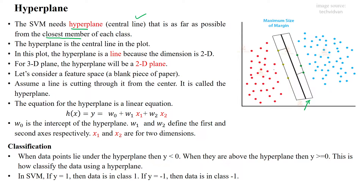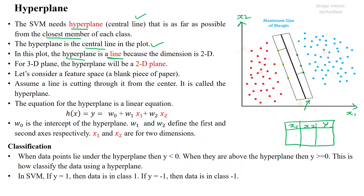The hyperplane is the central line in the given plot. In this plot the hyperplane is drawn as a line because the data is two-dimensional, having only two features. If our dataset has two features x1 and x2, the hyperplane will be drawn as a line. If we add one more feature x3, making the data 3D, then the hyperplane will be a two-dimensional plane.